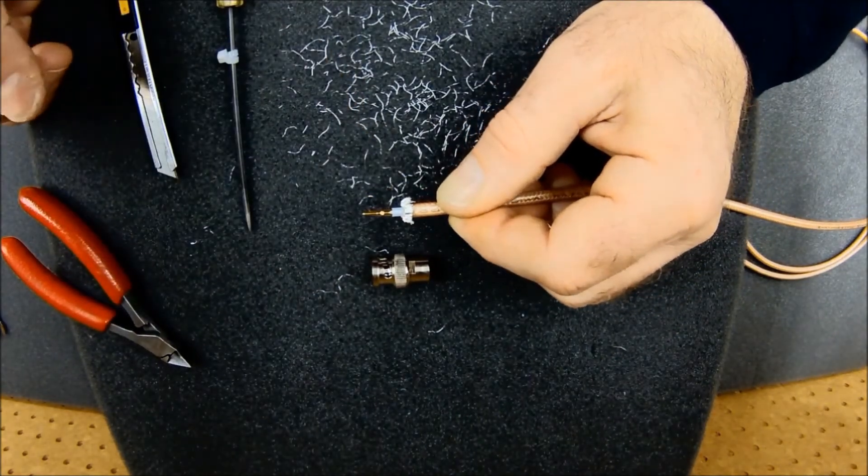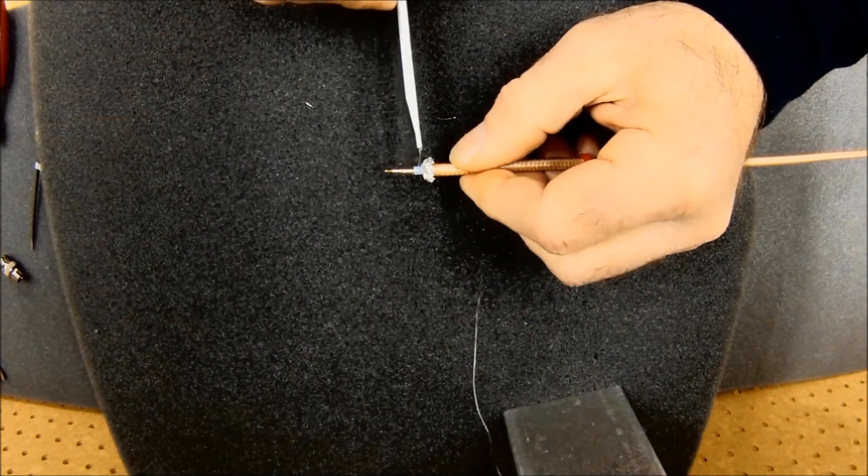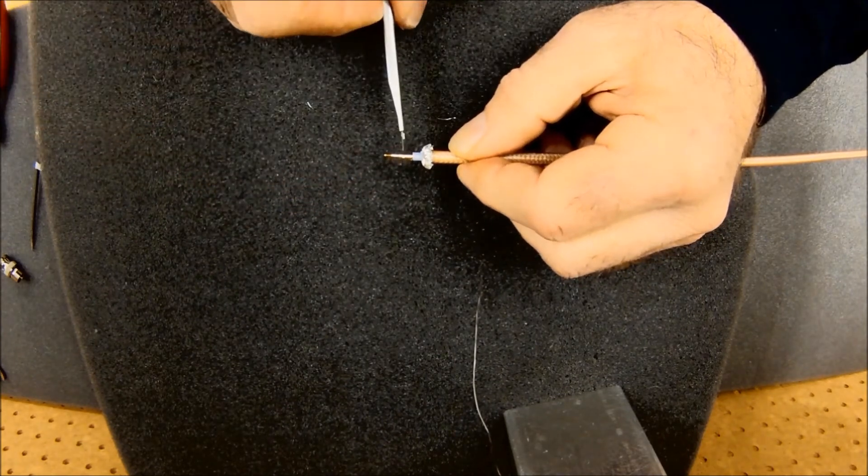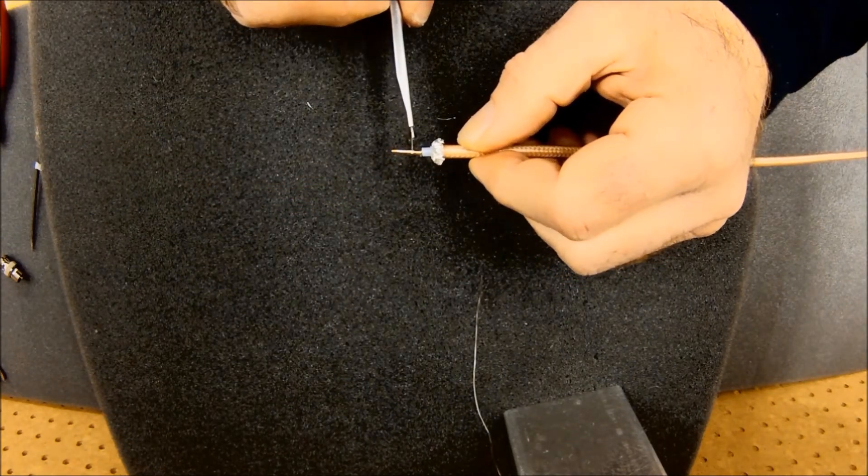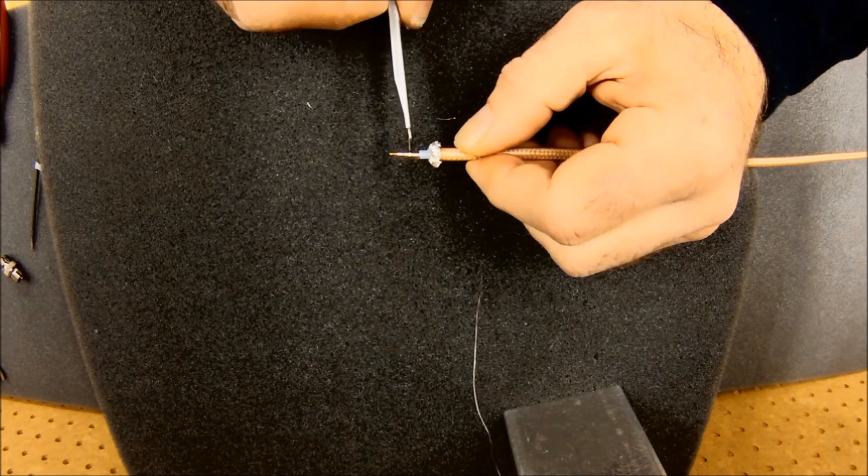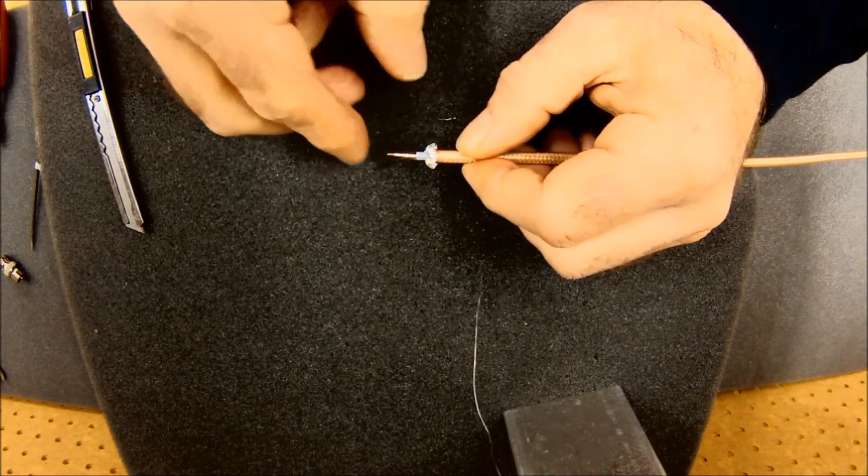And I can put this center conductor on. Notice this seats right up against the dielectric. And I can see, it might be hard to see on the video here, but I can see in that little inspection hole. I can see the center conductor wire. So I know I'm in the right distance.